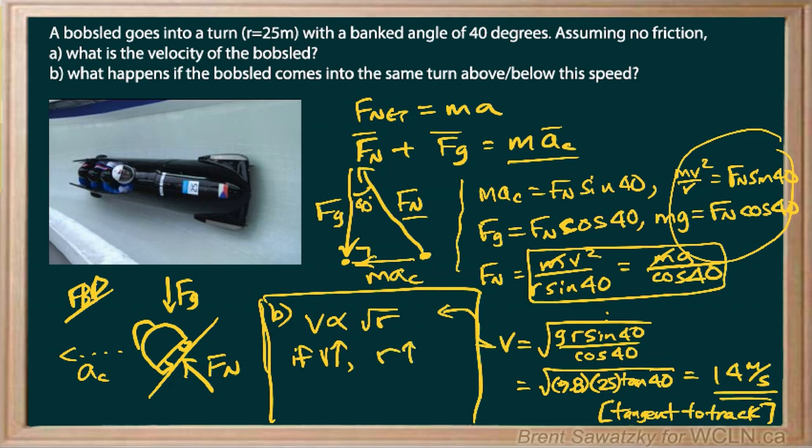So if the bobsled came into that corner at 16, 17, 18 kilometers per hour, it's going to go higher up on the bank. It's trying to create a greater radius in that turn.